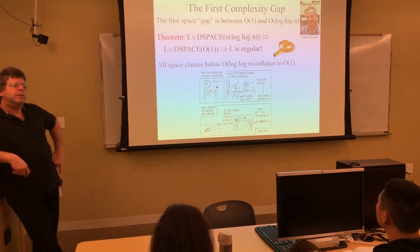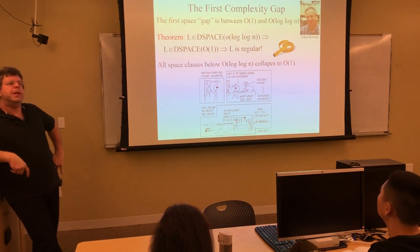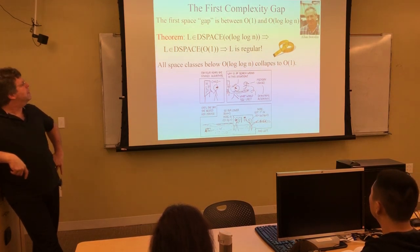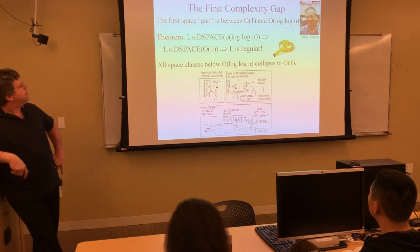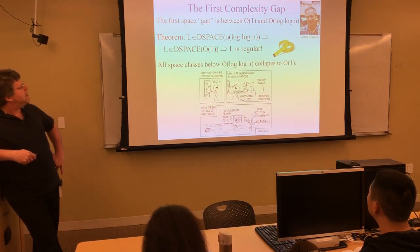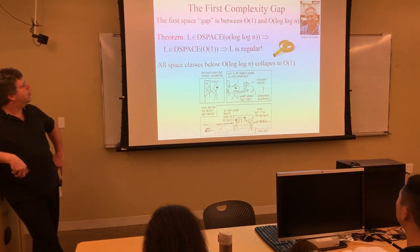That's hard to prove — we're not proving it here. But it's an example of a collapse: anything less than log-log collapses to zero, to no space at all, or equivalently constant space. Intuitively, if you have log space, you can use a counter — you can count from zero to n in log n bits. So if you have log space, you can count, and if you can count, you can recognize things like 0^n 1^n, which you can't do with a finite automaton.